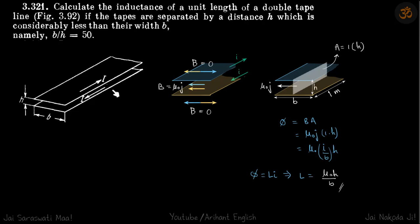We are given two parallel plates in which current is flowing. I is flowing in this direction and in the bottom plate it's in the opposite direction. We are to find the inductance of a unit length of these plates.